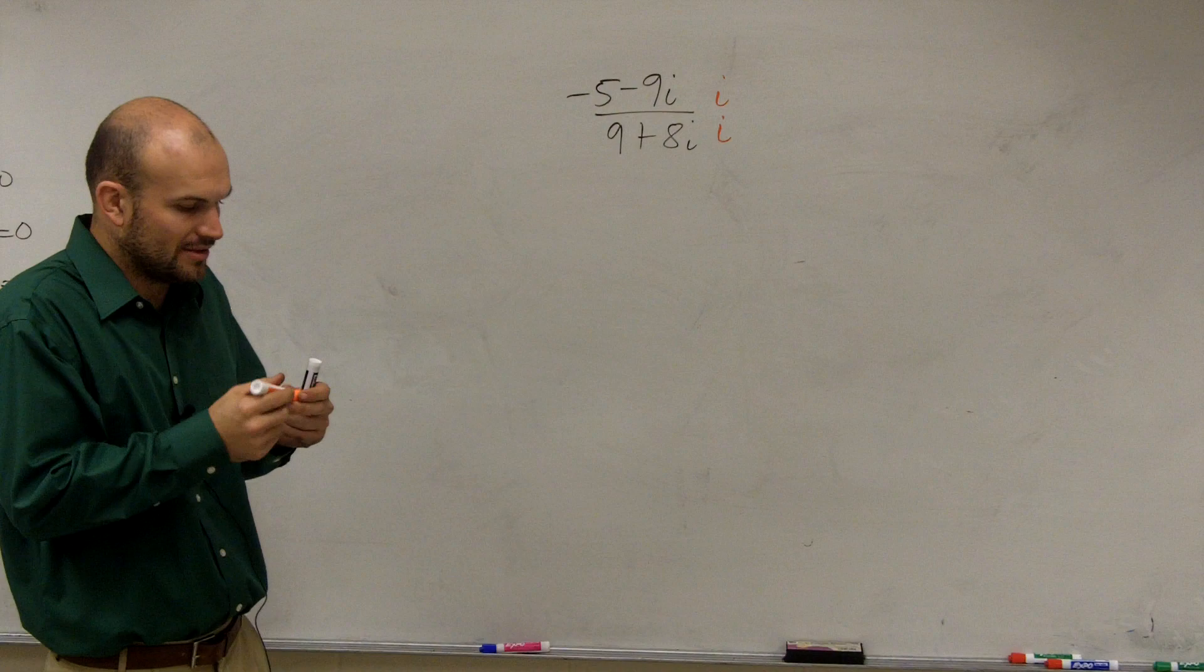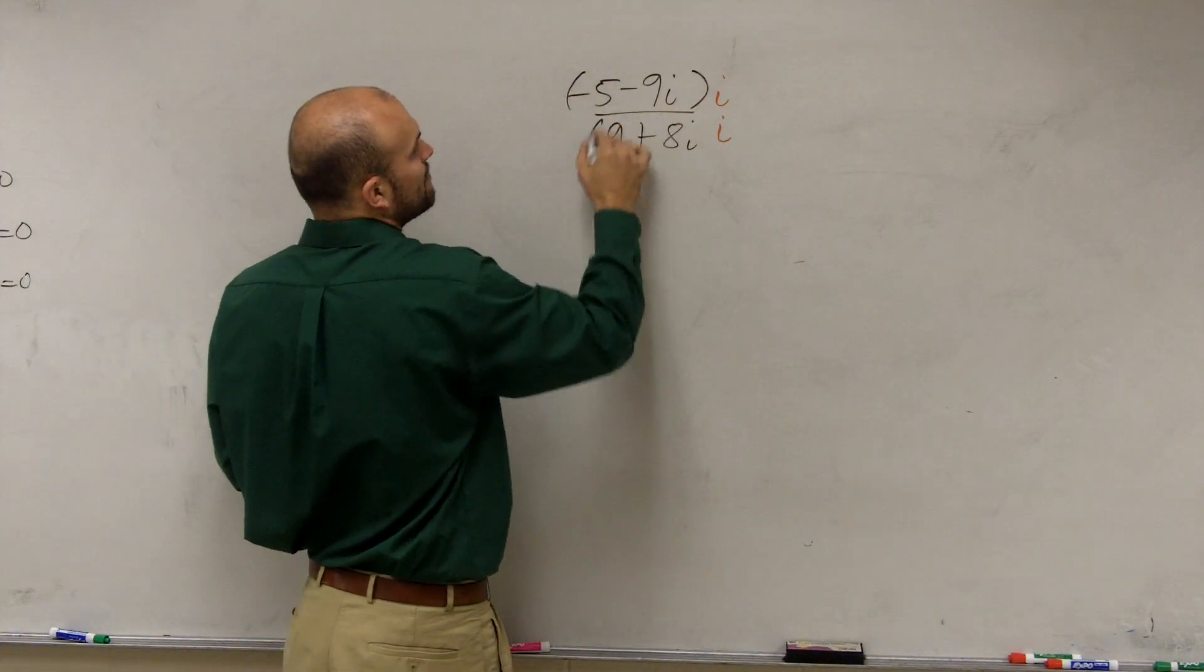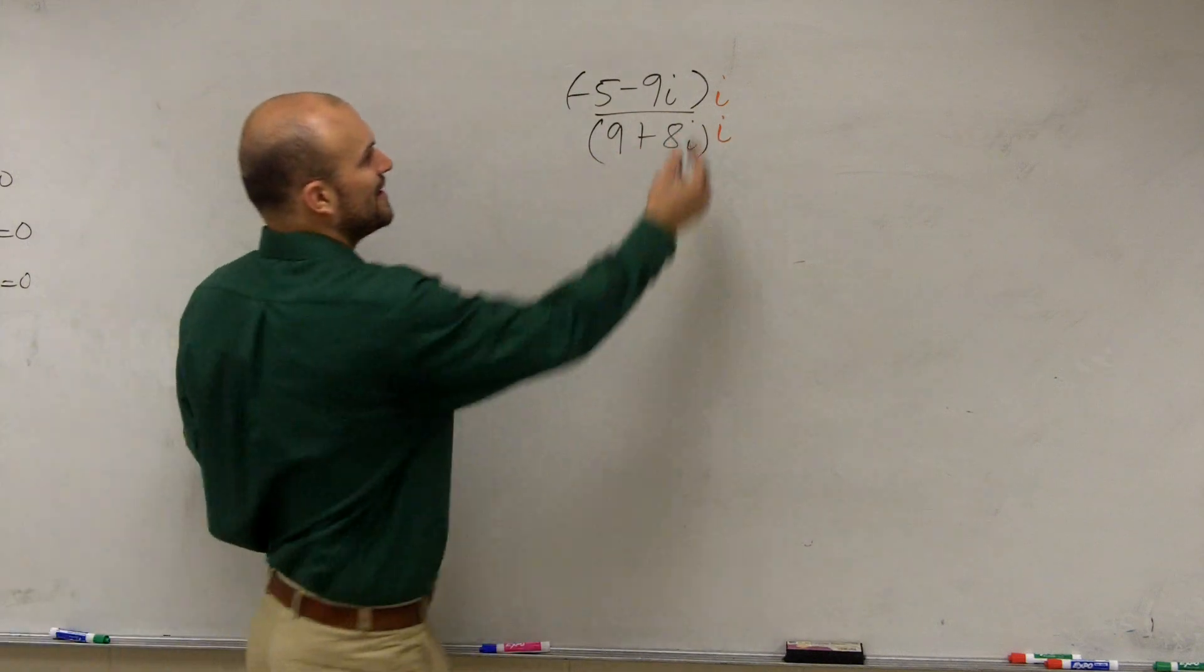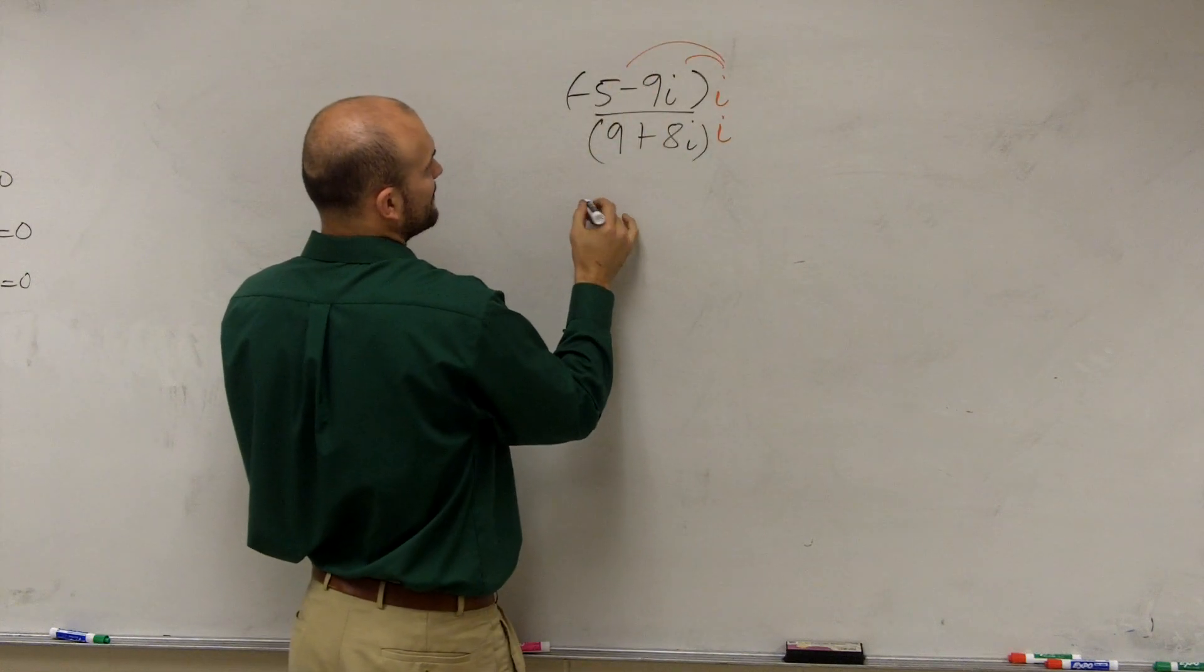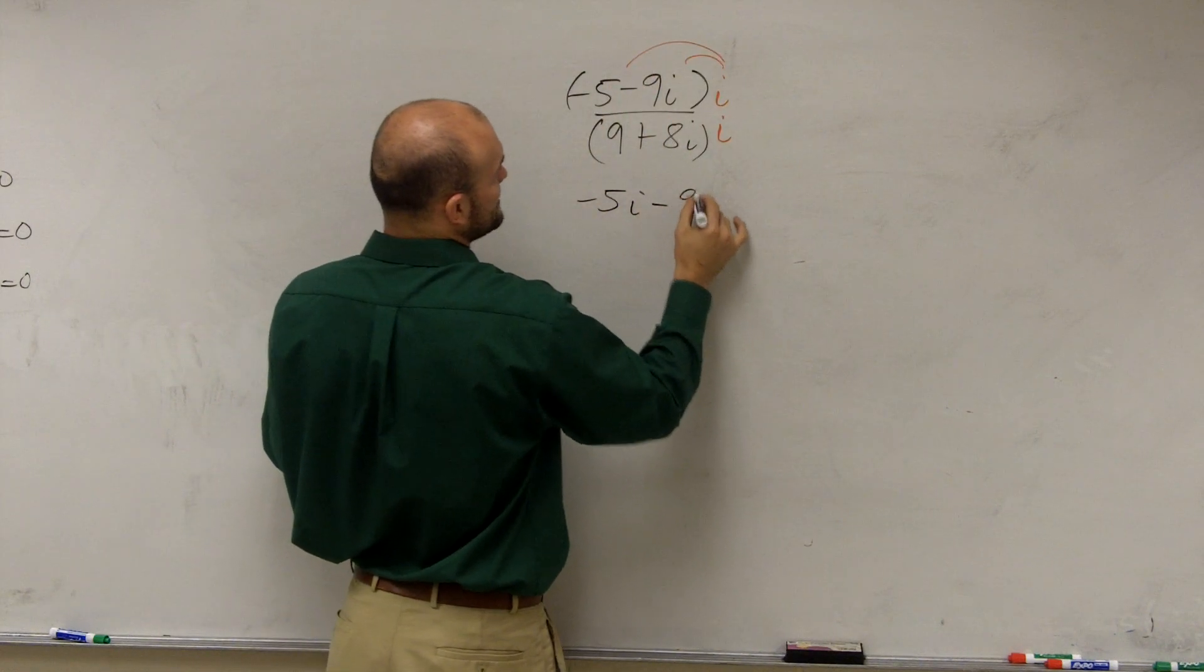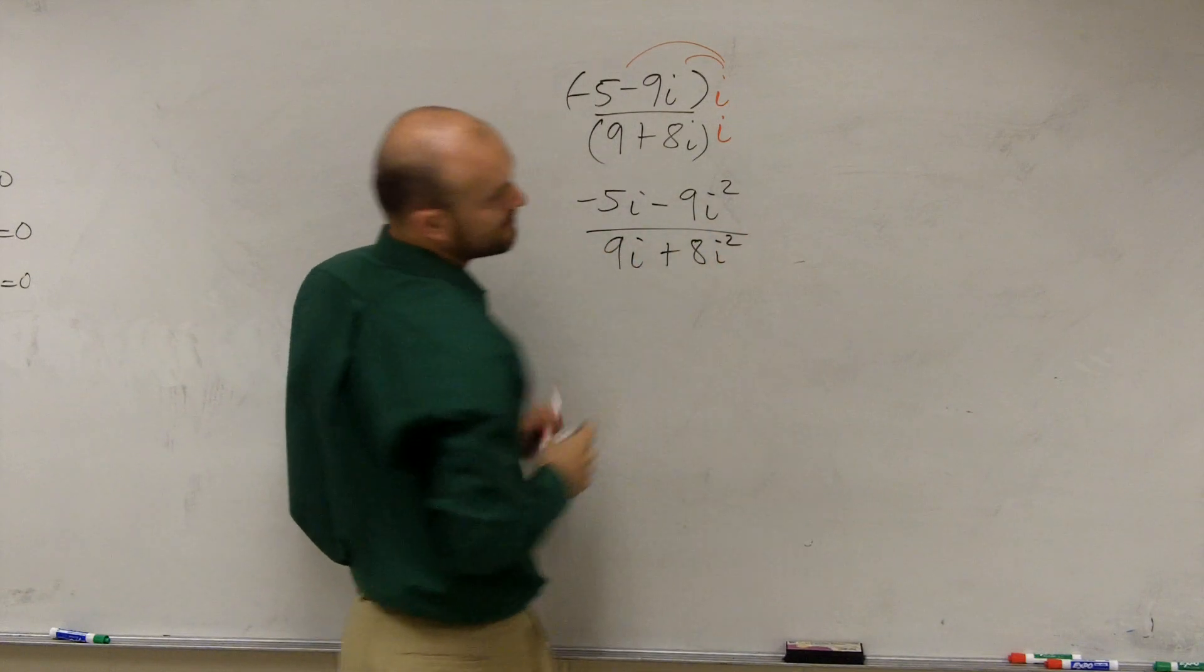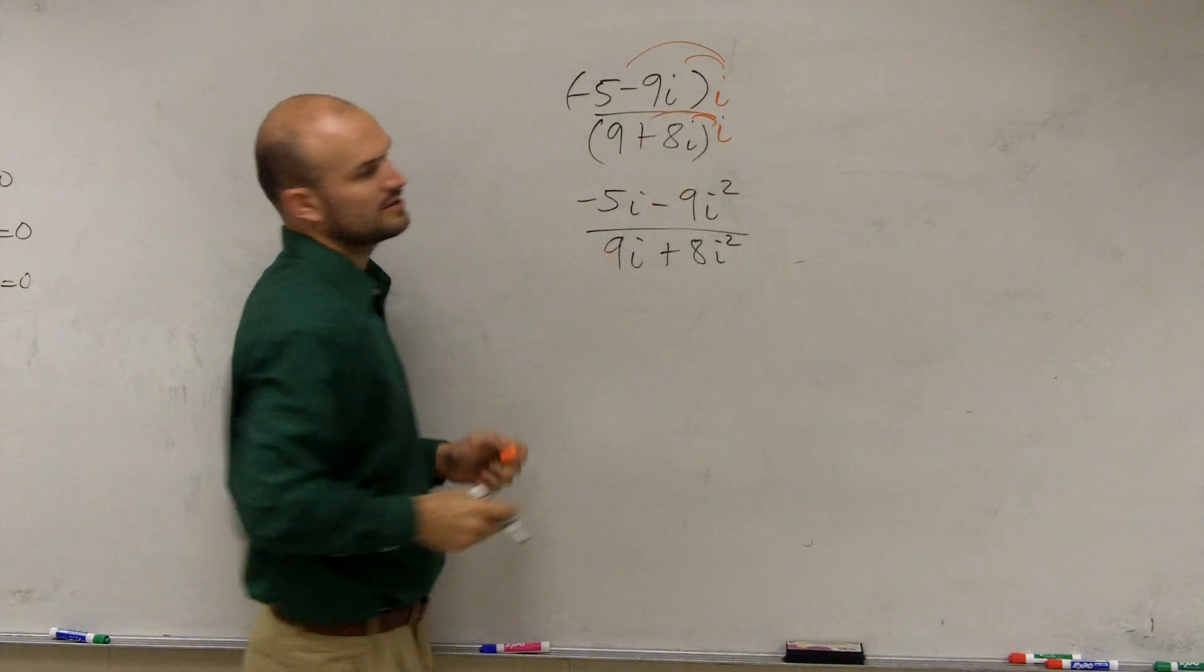And again, if you guys remember last class period, I kind of showed this. But when you do that, you've got to make sure, since we have binomials, we have to make sure we use applied distributive property. So therefore, we'd have negative 5i minus 9i squared all over 9i plus 8i squared, right? When you apply distributive property, does everybody see that?